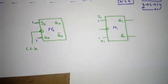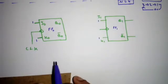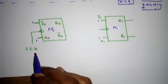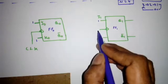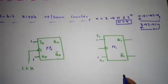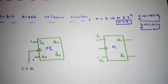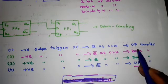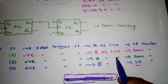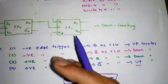The two flip-flops have J0,K0 and J1,K1 both tied to 1. These are negative-edge-triggered flip-flops. The key rules are: negative-edge trigger with Q as clock → up counting; negative-edge trigger with Q-bar as clock → down counting; positive-edge trigger with Q as clock → down counting; positive-edge trigger with Q-bar as clock → up counting.